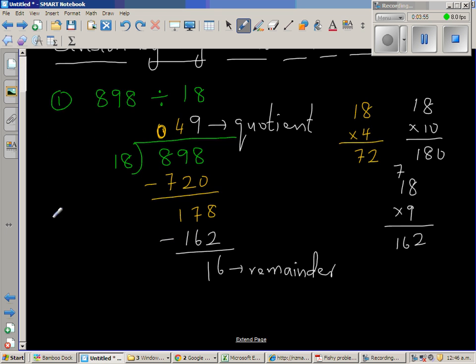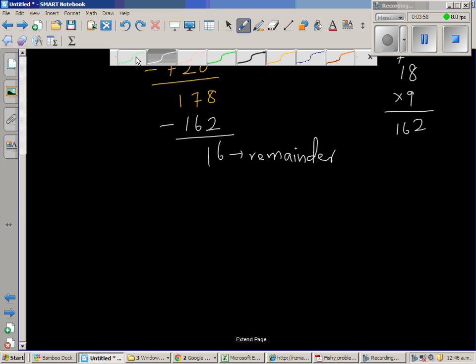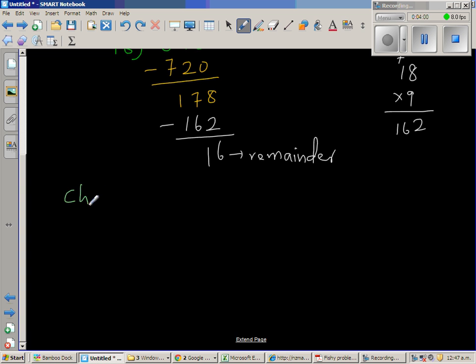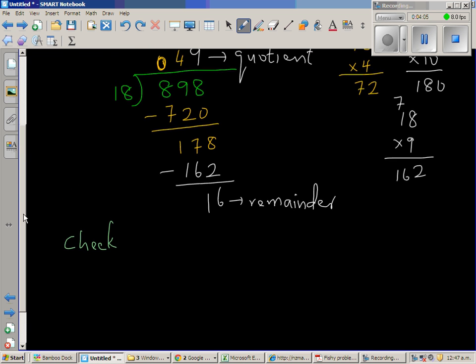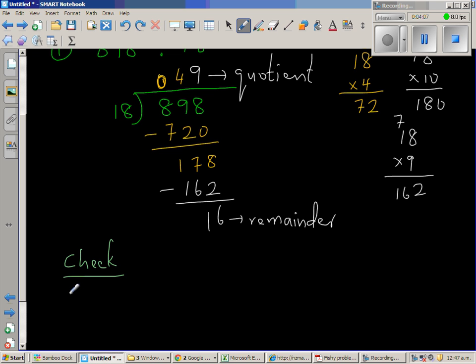How can you check that your answer is right? Let me show you how to check if your working is right. 18 times 49 plus 16 should give you 898. So 18 goes in 49 times and then 16 is the remainder. So this times this.